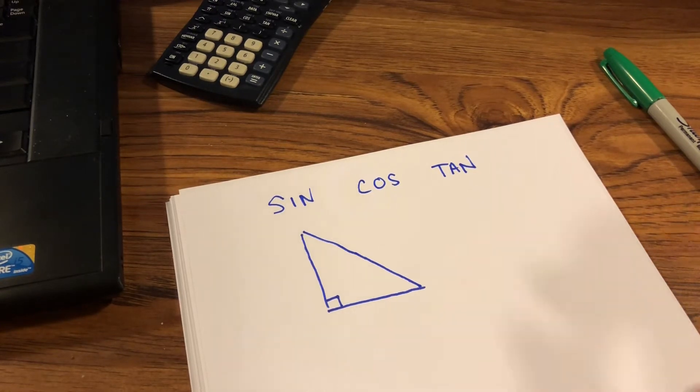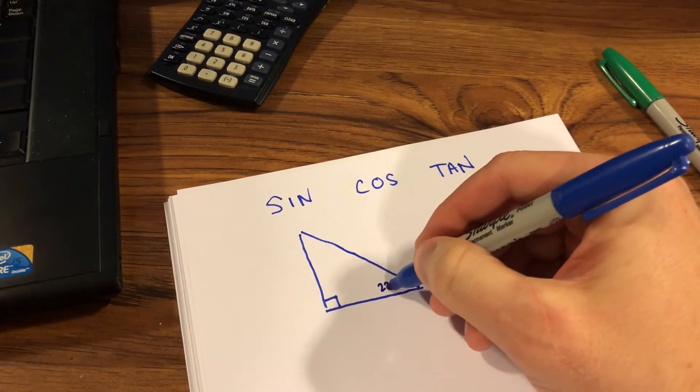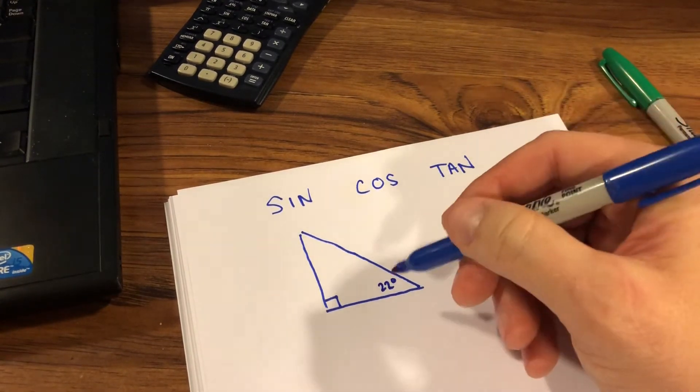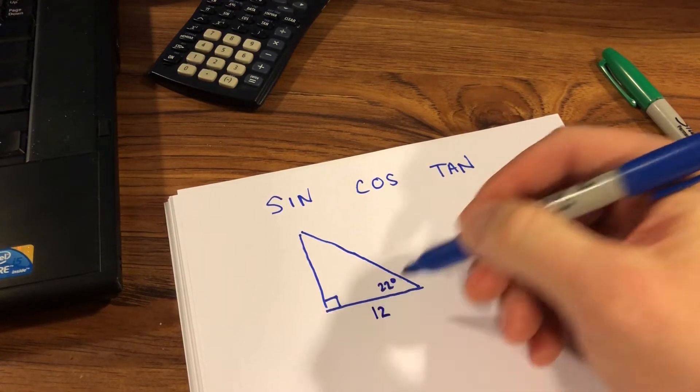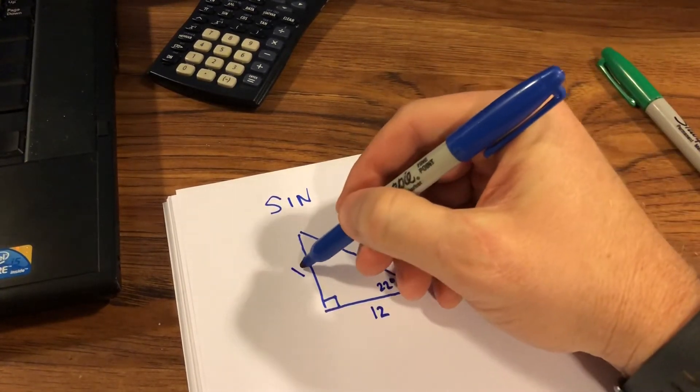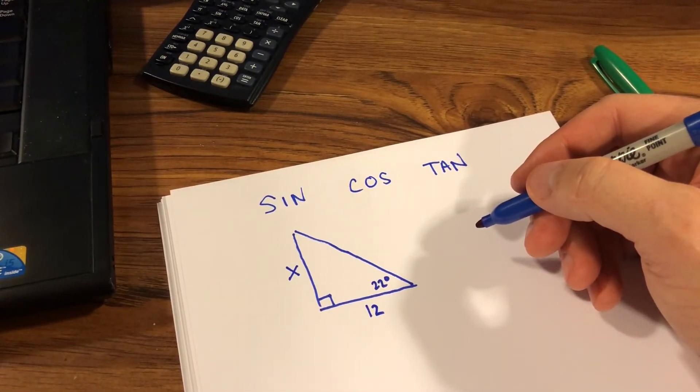If I am given this angle right here, let's say it's 22 degrees, and I'm told that this segment here is 12, and I want to find this length, what I have to identify is what parts of the triangle do I have.